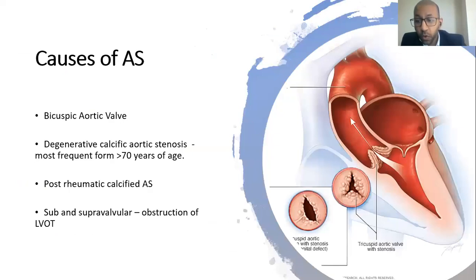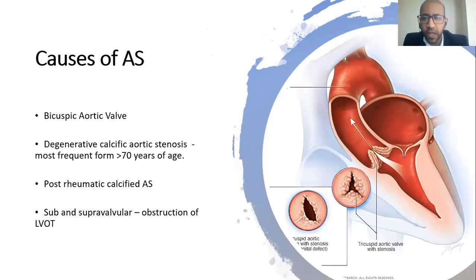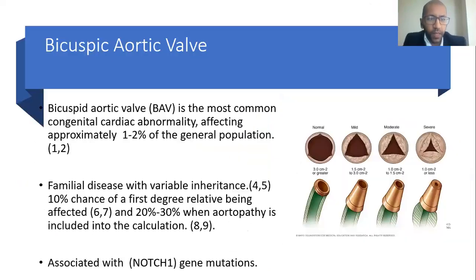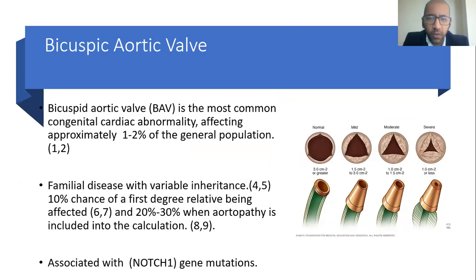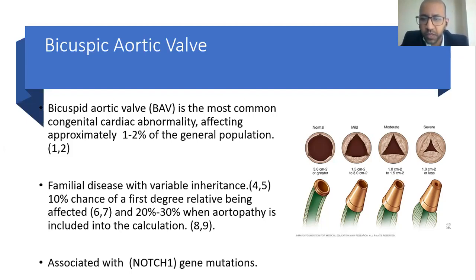Regarding causes of AS: bicuspid aortic valve is common especially in younger populations; degenerative calcified aortic stenosis is more common in the elderly; post-rheumatic calcified AS mainly occurs in developing countries; and there are also supravalvular obstructions. Bicuspid aortic valve is the most common congenital cardiac abnormality, affecting approximately 1 to 2% of the general population. It is a familial disease with variable inheritance — a 10% chance of a first-degree relative being affected, rising to 20–30% when aortopathy is included. It has been associated with a NOTCH1 gene mutation.